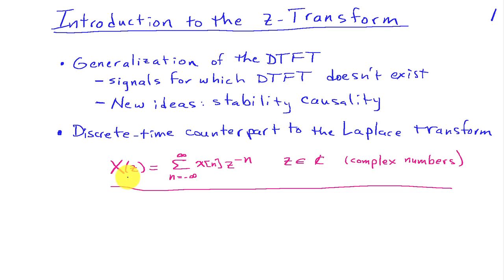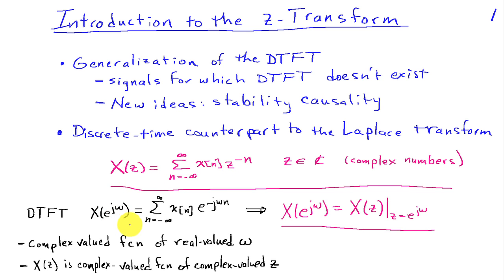So X of Z is a complex function of a complex number. We can see the correspondence to the discrete-time Fourier transform, which I've written out down here. We have X of E to the J omega is a sum from minus infinity to infinity of X of N, E to the minus J omega N.